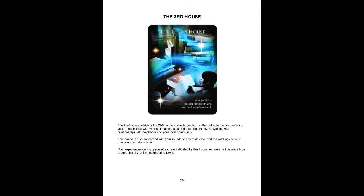The third house, which is the 2 a.m. to the midnight position on the birth chart wheel, refers to your relationship with your siblings, cousins and extended family, as well as your relationship with neighbors and your local community. This house is also concerned with your mundane day-to-day life and the workings of your mind on a mundane level. Your experiences during grade school are indicated by this house, as are short-distance trips around the city or into neighboring towns.